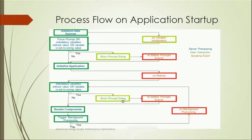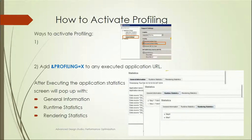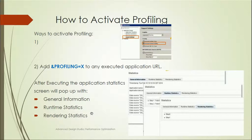One of the things we can do to analyze performance is activate profiling. Profiling gives us statistics about the application, including general information, runtime statistics, and rendering statistics — for example, how much time the data source takes to fetch and process data, and how long it takes to render different components.